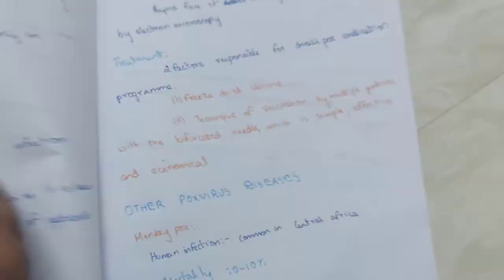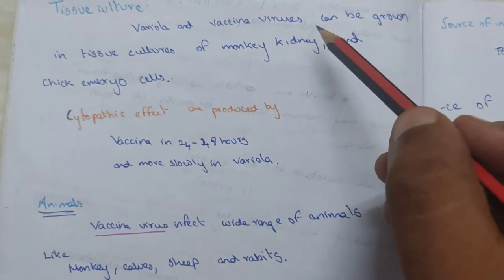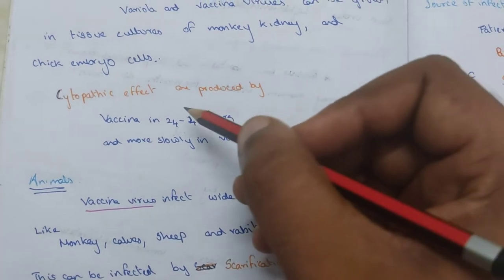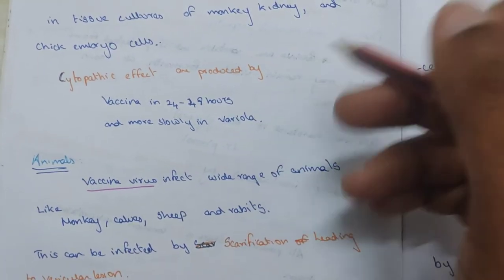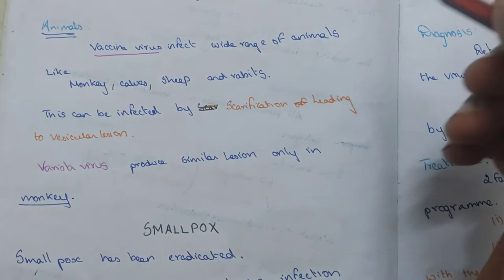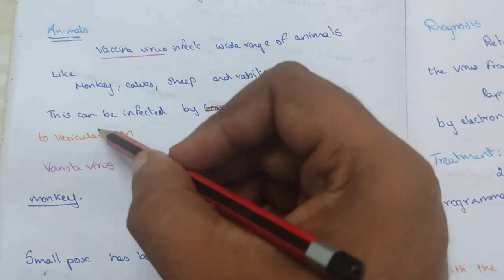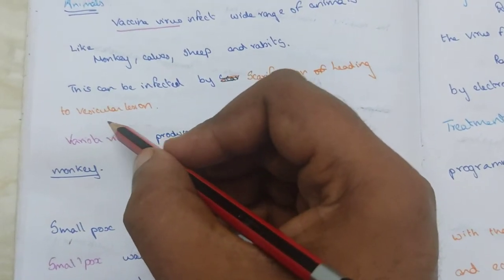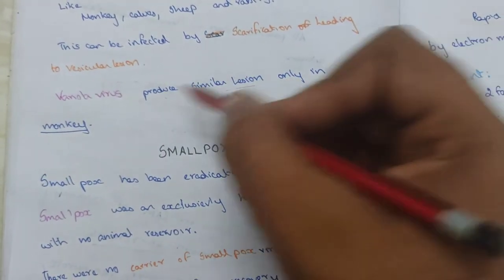Variola and vaccinia viruses can be grown in tissue culture using monkey kidney and chick embryo cells. Vaccinia produces a cytopathic effect in 24 to 48 hours, while variola does so more slowly. Vaccinia virus can infect a wide range of animals like monkeys, calves, sheep, and rabbits by scarification, leading to vesicular lesions. Variola virus produces similar lesions only in monkeys.